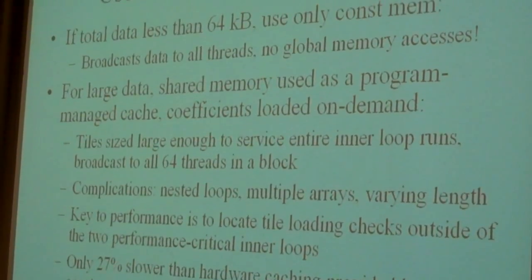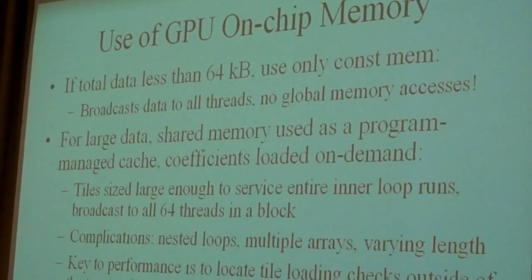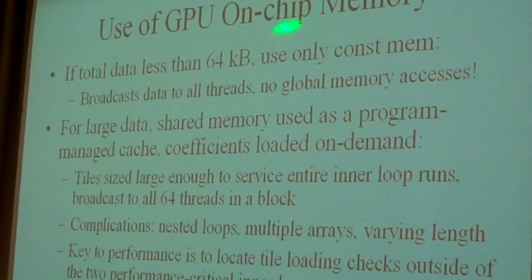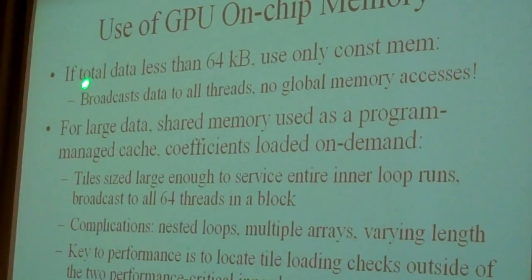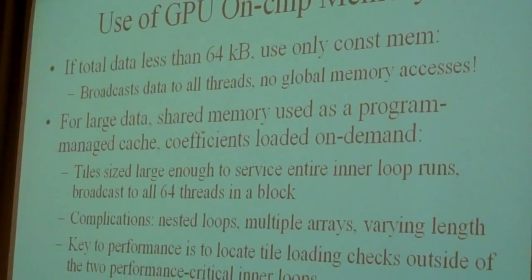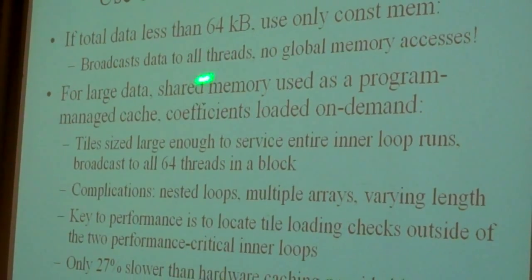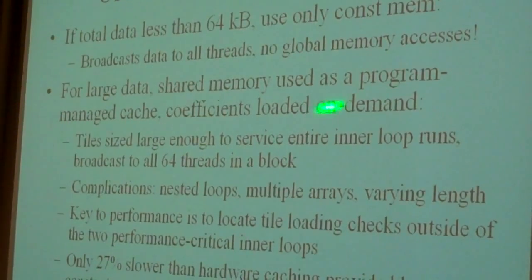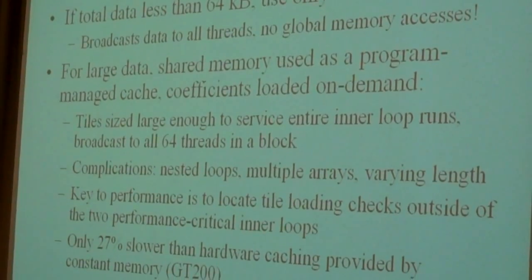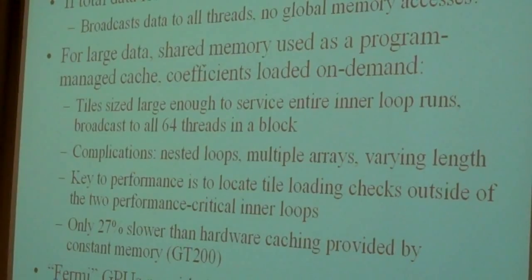And so the way we've implemented this code for these multiple generations of GPUs, if we're not running on a Fermi and the total size of the data set is less than 64K, we put all of it in constant memory and then we broadcast that data to all of the threads and then we get our many terabytes of effective memory bandwidth. If we have a data set size that's much larger than can fit in that constant memory, then we have to take a different strategy and we instead use shared memory as sort of a program managed cache.